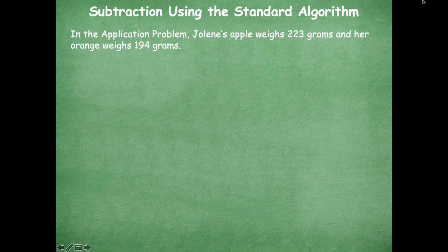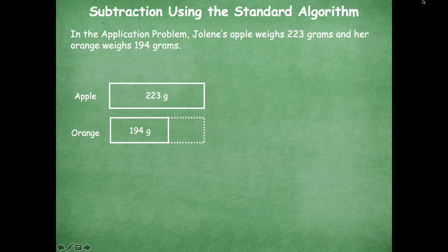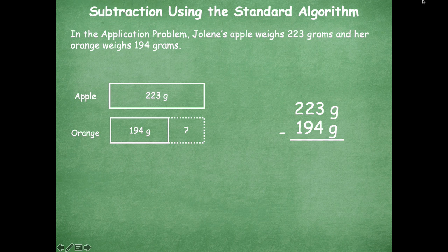Here's the next part of the application problem. Jolene's apple weighs 223 grams and her orange weighs 194 grams. I'll model that — here's the apple 223, here's the orange 194, and that question mark represents the difference between the weight of the apple and the orange. To find the difference we need to subtract. Starting in the ones place: I cannot take away 4 ones from 3 ones, so I go to the tens place and borrow one of those tens, decomposing or breaking it apart — I'm left with only 1 ten. I decompose that 10 into 10 ones.